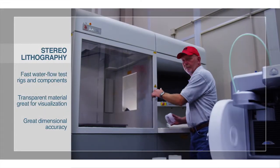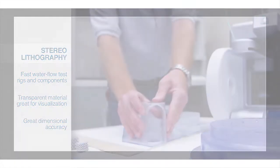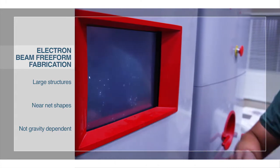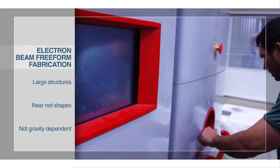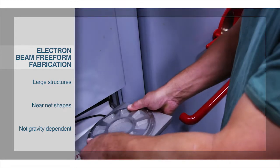Stereolithography uses a liquid vat of thermoset resin that is cured by a laser beam. Electron beam freeform fabrication utilizes metal wire that is fed into a moving electron beam welder and forms up parts to about 80% of the final shape that are then machined to spec.